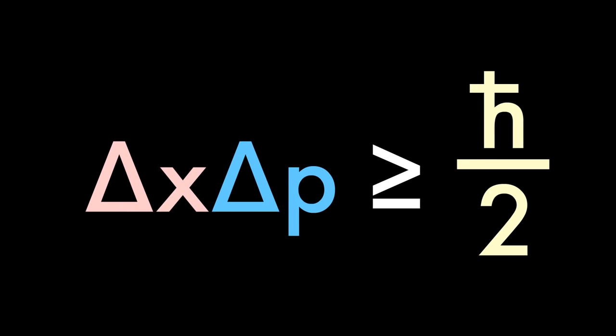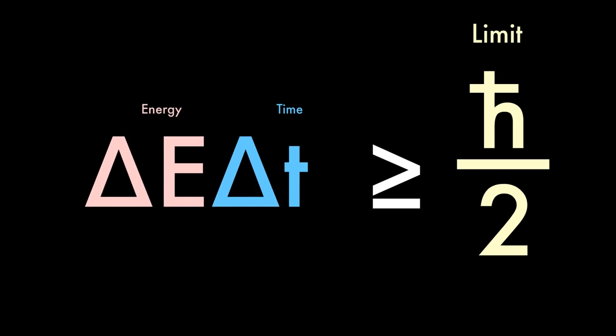The Heisenberg Uncertainty Principle states that knowledge of two related variables, such as momentum and position, is limited. A version of the Uncertainty Principle relates energy and time, where the information for both is limited.